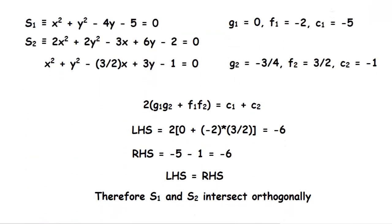Let's take an example to understand this better. Here we are asked to show that the two circles S1 and S2 intersect orthogonally. So here S1 is given as x² + y² - 4y - 5 = 0, and S2 is given as 2x² + 2y² - 3x + 6y - 2 = 0.